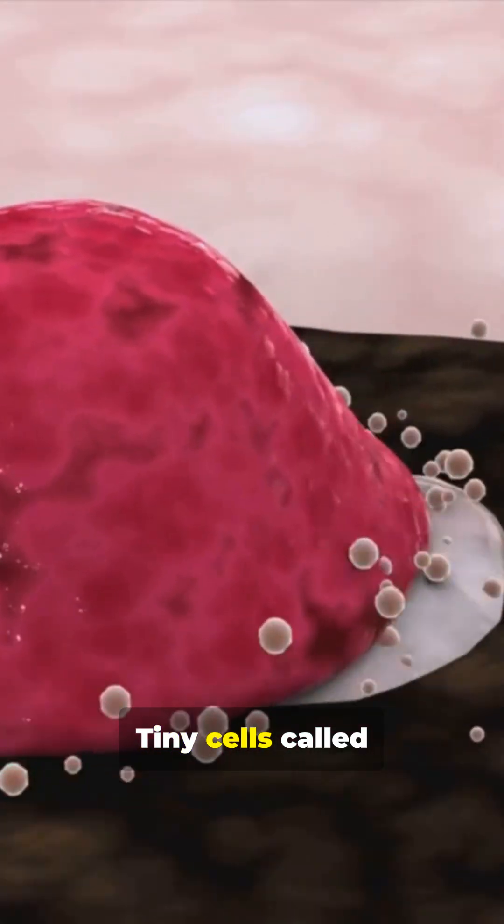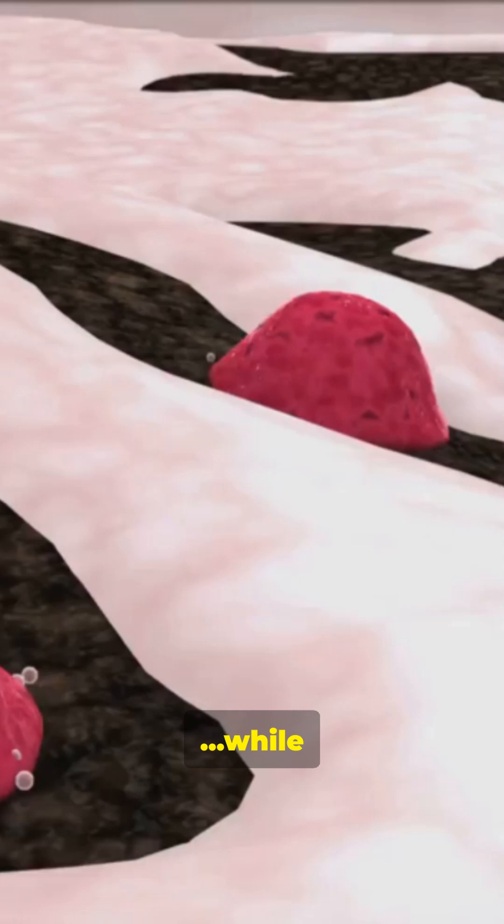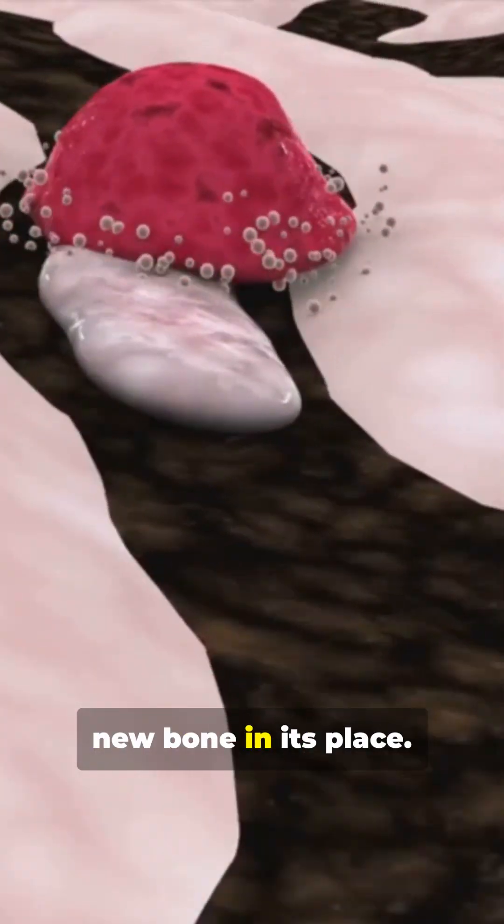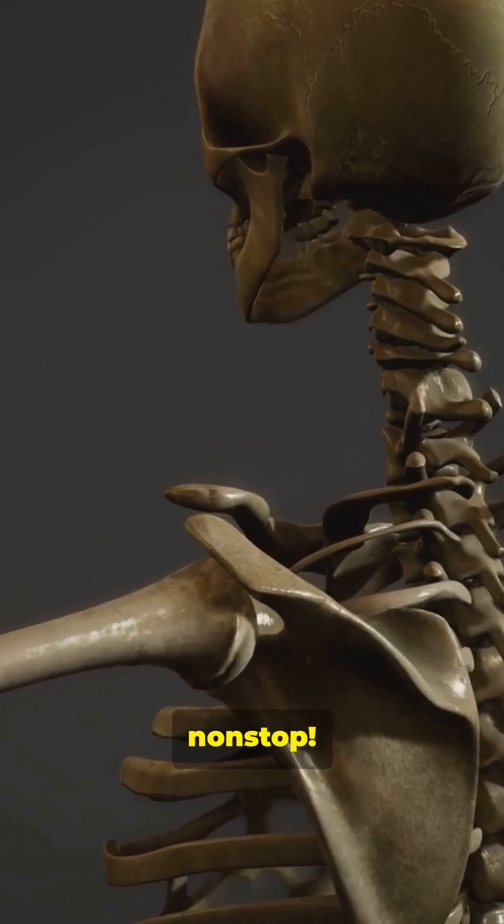Tiny cells called osteoclasts break down old bone while osteoblasts build new bone in its place. It's like swapping old bricks for new ones non-stop.